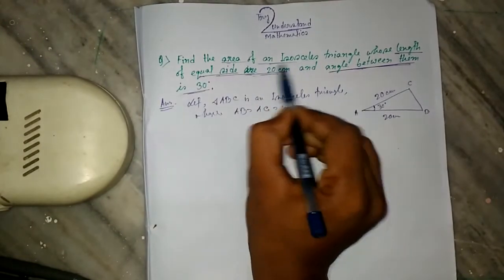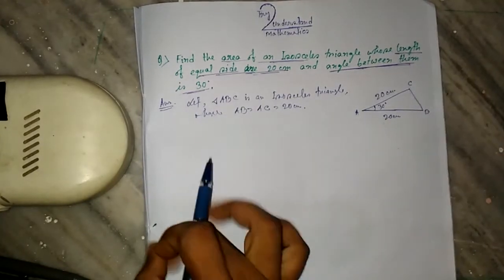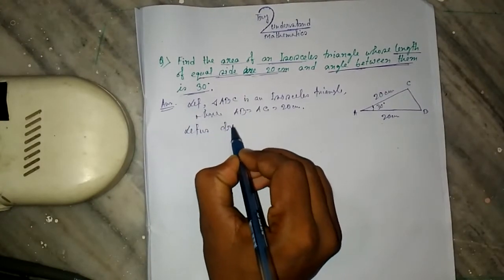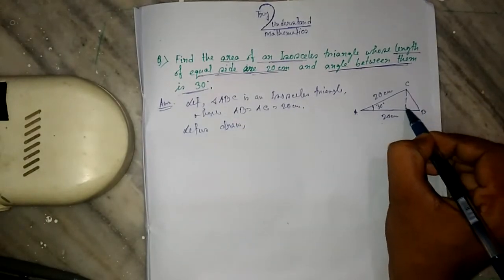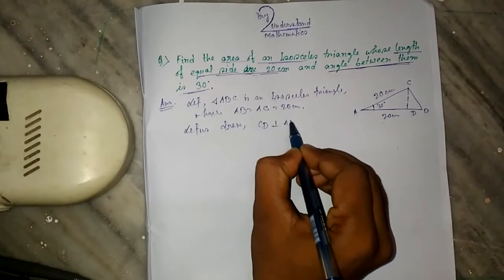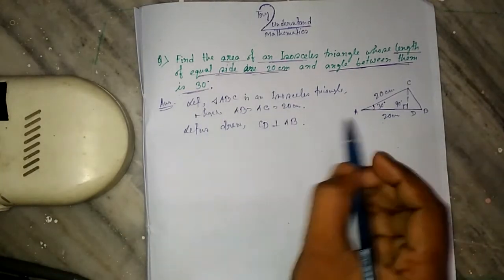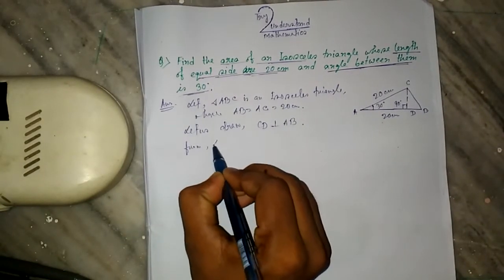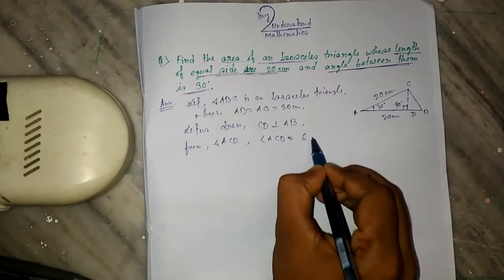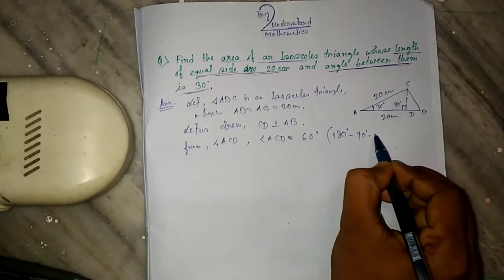Let us find the area of the isosceles triangle. The base is known but the height is not known. To find the height, let us draw a perpendicular from C to AB. This angle is 90 degrees, so from the previous video we can easily find angle ACD equals 60 degrees. How? 180 minus 90 minus 30 degrees equals 60 degrees.